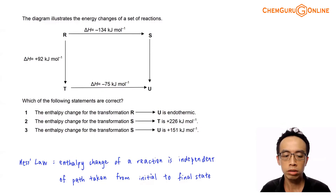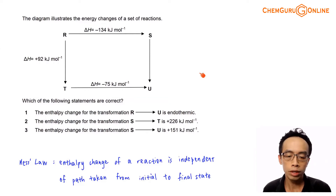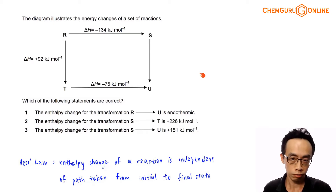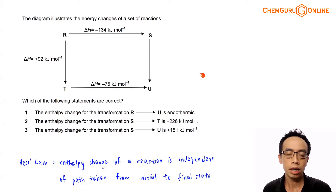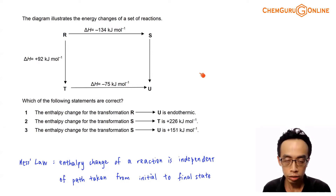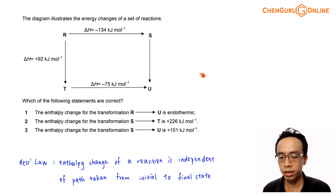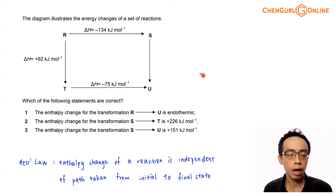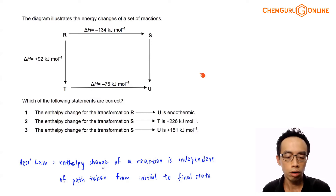We make use of Hess's law, which states that the enthalpy change for a reaction is independent of the pathway taken from the initial state to the final state. So if you have a reaction involving A to B, the enthalpy change for A to B is the same whether we take a shorter path or a longer path. As long as the reactant and the product are the same, the enthalpy change for the process regardless of the pathway will effectively be the same. Let's use this exercise to illustrate and understand Hess's law.